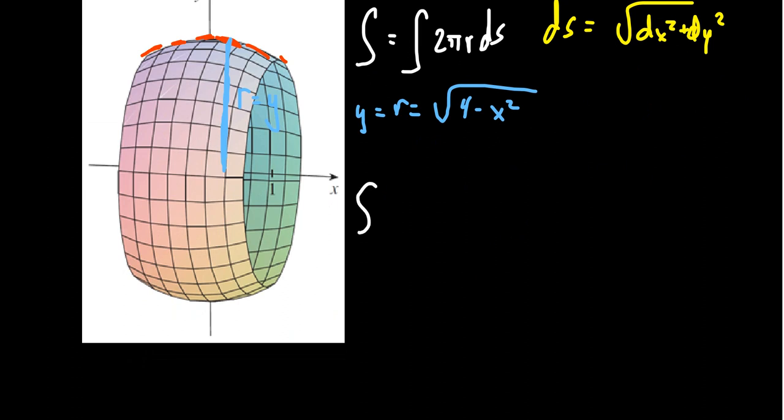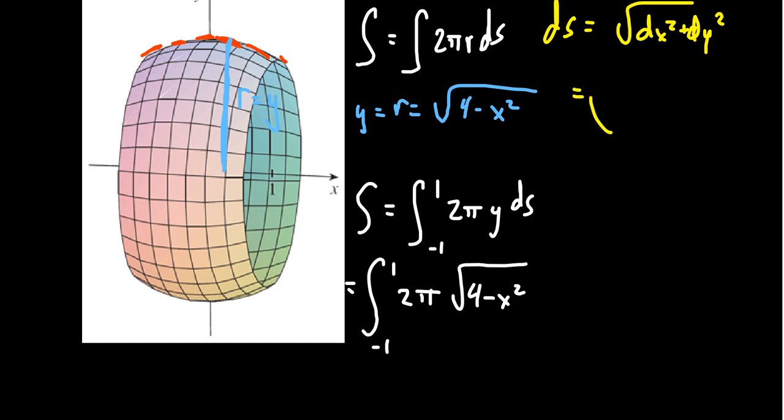So the surface area is going to equal the integral from negative 1 to 1. We're going to get 2πy ds. And like we saw before, these are my x-coordinates, x equals negative 1 to x equals 1. So we get negative 1 to 1, 2π. Let's move this down below. We're going to get the integral from negative 1 to 1, 2π, the square root of 4 minus x squared. Now we're going to use the format of ds that's helpful here to integrate with respect to x. We're going to use the format to take the square root of 1 plus y prime squared dx.